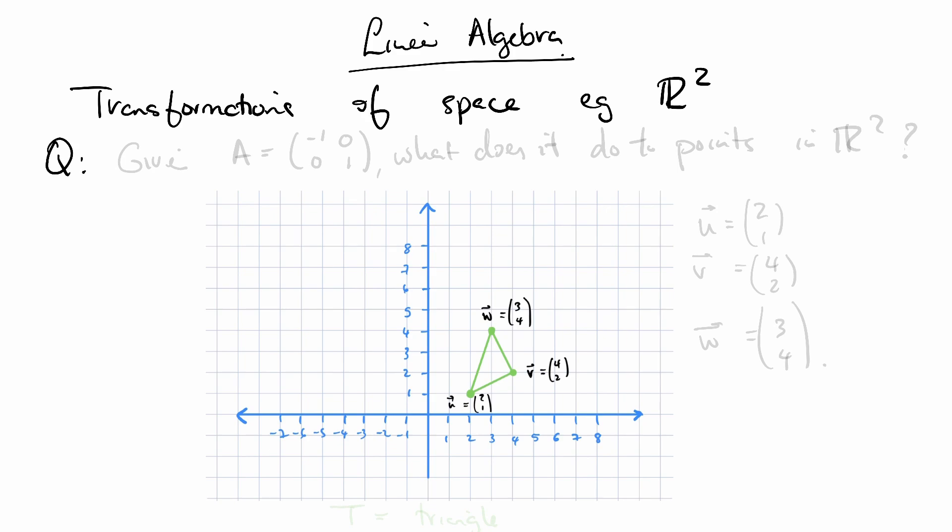Here's a question that you can ask. Given a matrix A, negative 1, 0, 0, 1, what does it do to the points in R2?